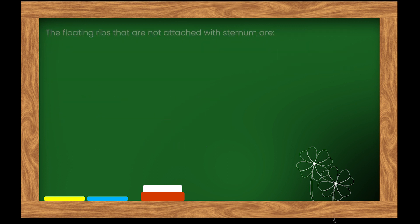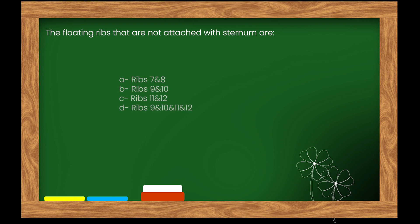Here is our next question. The floating ribs that are not attached with the sternum are: Options: A. Ribs 7 and 8. B. Ribs 9 and 10. C. Ribs 11 and 12. D. Ribs 9, 10, 11, and 12.